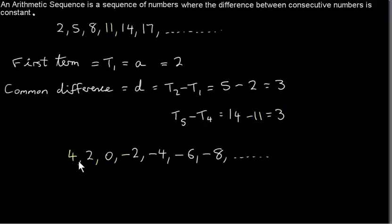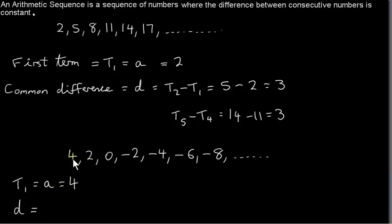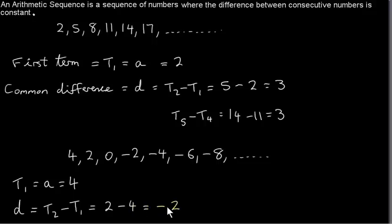Here is another example of an arithmetic sequence. The first term, or T1, which is also denoted by small a, is 4. The common difference d is got by taking any term and subtracting the previous term. So let's suppose we take the second term T2 and subtract the first term. That's going to give us 2 minus 4, which is minus 2. So d can be negative. You can see that 4 minus 2 is 2, 2 minus 2 is 0, 0 minus 2 is minus 2, minus 2 minus 2 is minus 4, and so on.